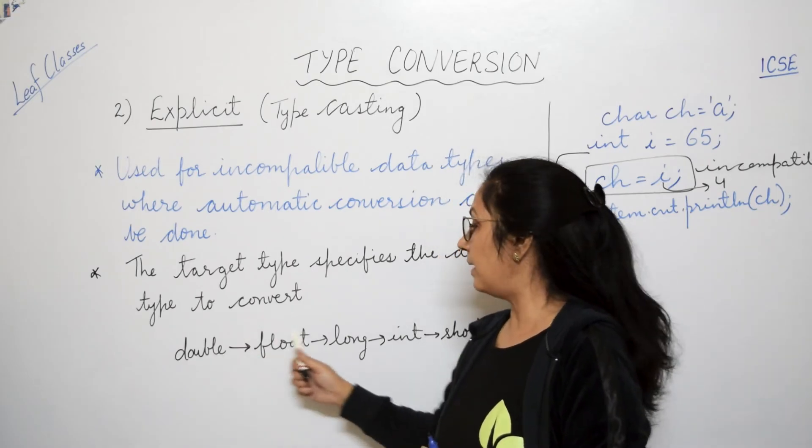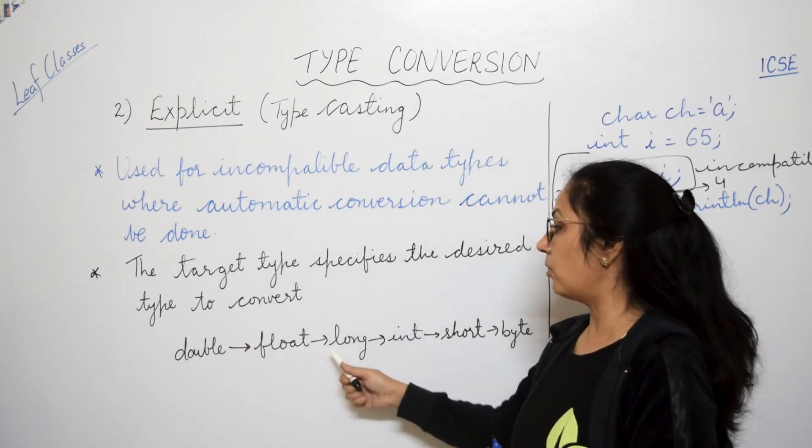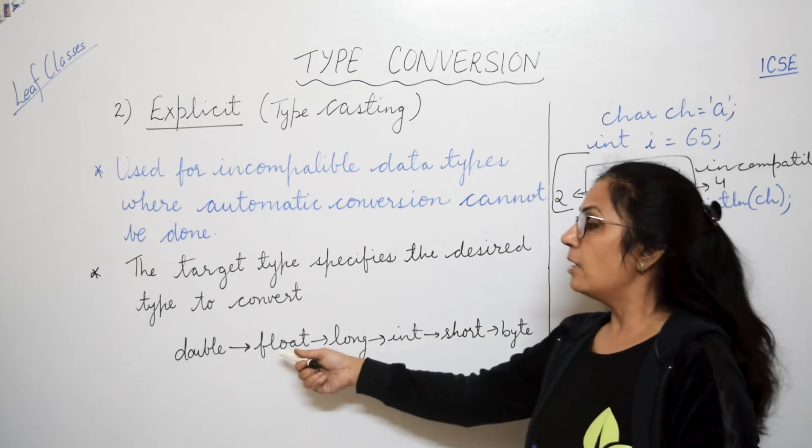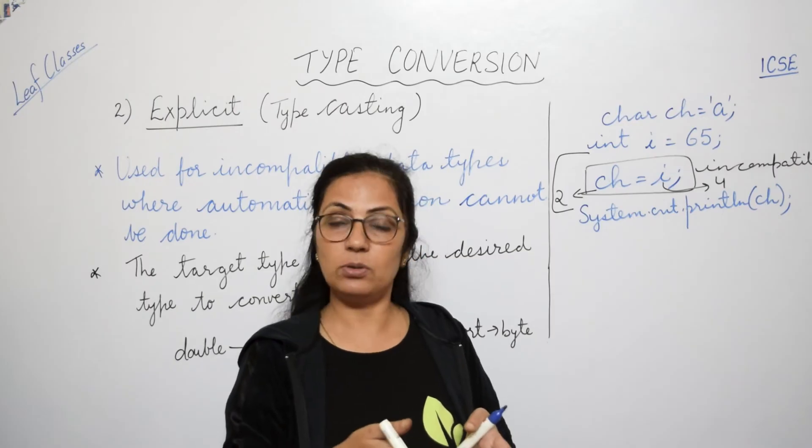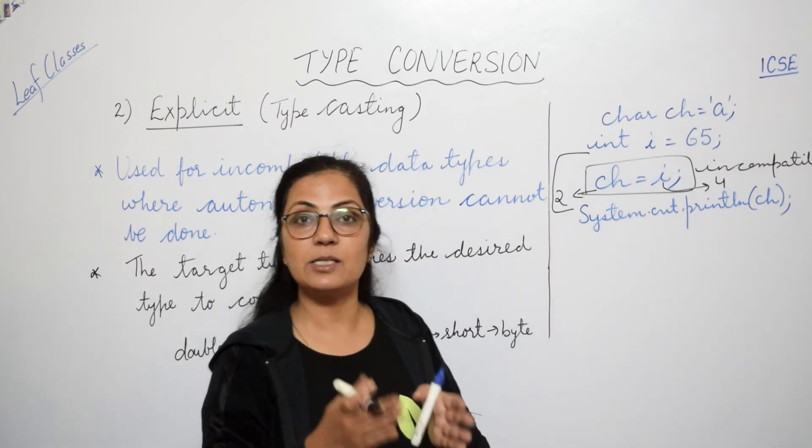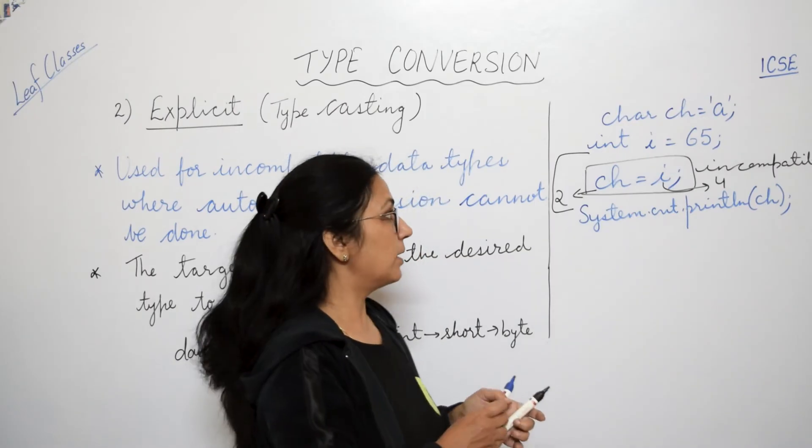The target type, we have to specify that according to the resultant data type which we want. Isko hum bolte narrowing type conversion also. Isme double ko hum float mein kar sakte hain, double ko long mein kar sakte hain, float ko long mein, float ko int. So from the higher data type to the lower data type also, the conversion is possible in case of explicit conversion.